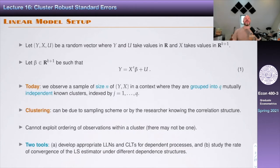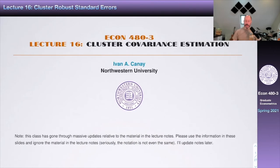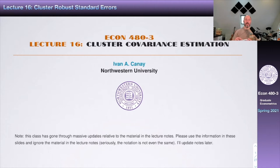The last two classes, we talked about estimating robust standard errors under heteroskedasticity — the heteroskedasticity-consistent (HC) standard errors. We showed that the so-called HC standards were consistent and did a proof of that. Then last class, we talked about the HAC standards — heteroskedasticity-autocorrelation-consistent standard errors.